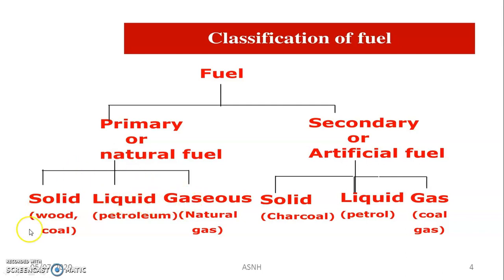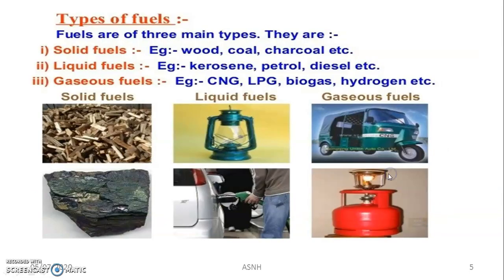Wood and coal are the best examples of solid primary fuels. Petroleum products are in the liquid category, and natural gas is a gaseous primary fuel. Charcoal is the best example of a solid artificial fuel, petrol is an example of liquid artificial fuel, and coal gas — mostly used in industries — is an example of a gaseous artificial fuel. This gives an idea about different states and examples of fuels: solid, liquid, and gaseous.